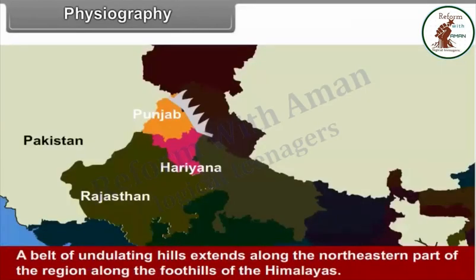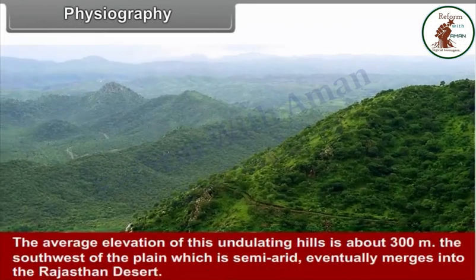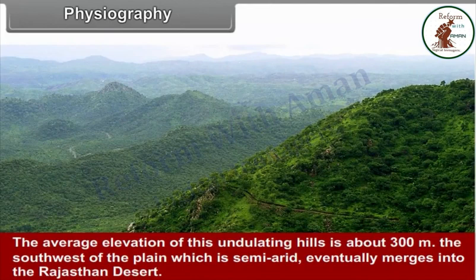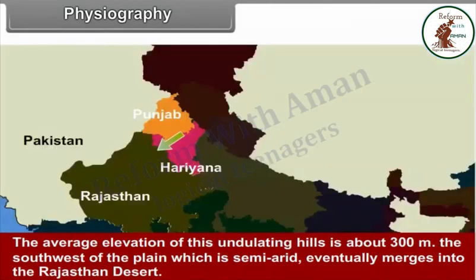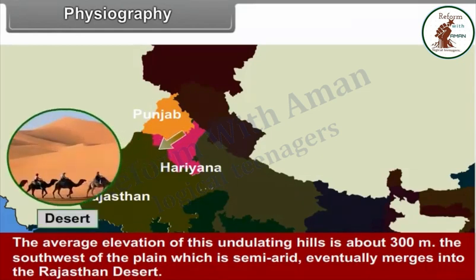A belt of undulating hills extends along the north-eastern part of the region along the foothills of the Himalayas. The average elevation of these undulating hills is about 300 meters. The south-west of the plain, which is semi-arid, eventually merges into the Rajasthan desert.